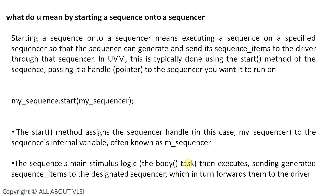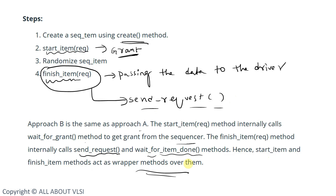These are all the methods available: macros, or built-in methods with Approach A or Approach B. In all cases, we only have three steps: creating the instance, randomizing the data, and sending it to the driver via the sequencer.